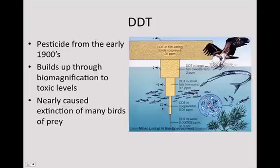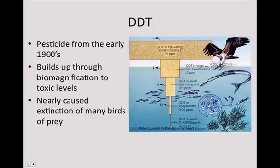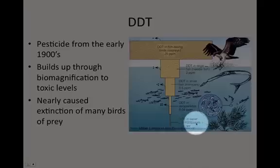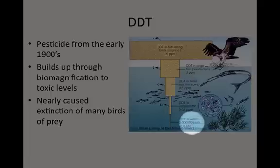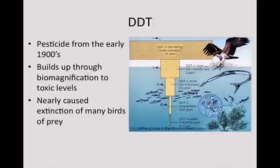Let's take a closer look at DDT. It's a pesticide from the early 1900s, and it was phenomenal at killing insects. You spray DDT into water and it will kill the larvae of mosquitoes. However, it builds up through biomagnification to toxic levels and nearly caused the extinction of many birds of prey. This diagram follows the exact same pattern we talked about before. At the very beginning it's very low — 0.00003 parts per million. There's not a lot of DDT in the water, and short term we see zero effect from biomagnification.